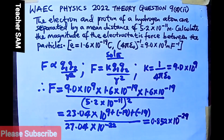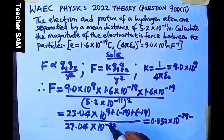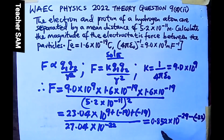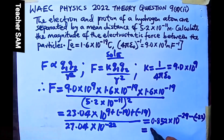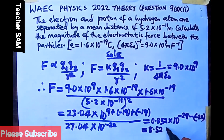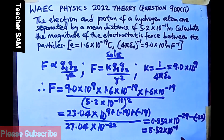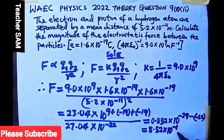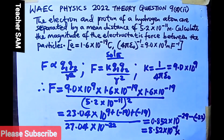Because this is division, we subtract the denominator power. The denominator exponent for 5.2 squared is 10 raised to negative 22. So we have negative 29 minus negative 22, which gives negative 7. Expressing 0.852 in standard form as 8.52 times 10 raised to negative 1, we then add the exponents: negative 1 plus negative 7 gives negative 8.